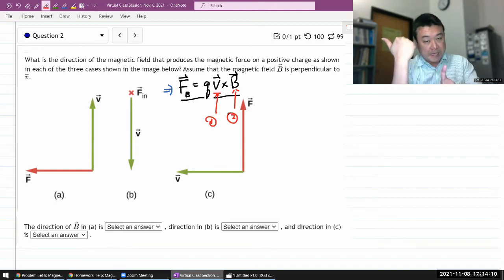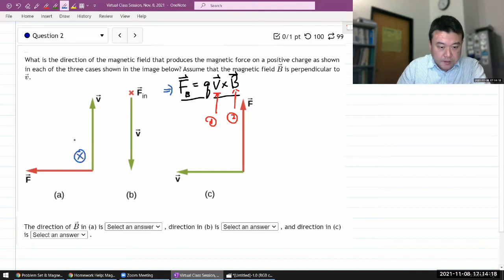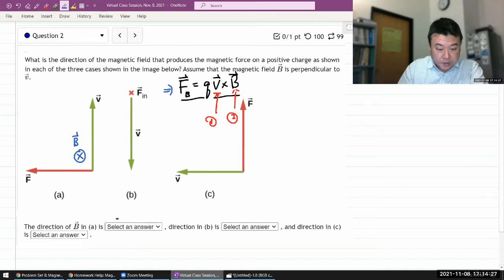So, V cross B. If my B, the magnetic field vector is pointing into the screen in this picture. If B is pointing into the screen, then V cross B will give me the leftward force. So, that's it. For A, it should be into screen or into page.